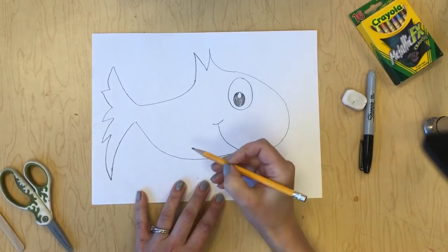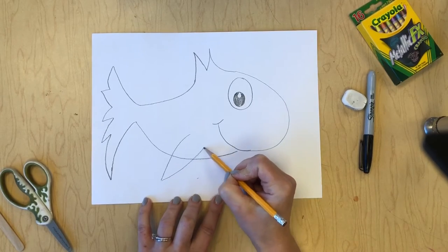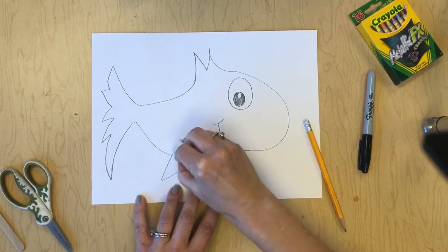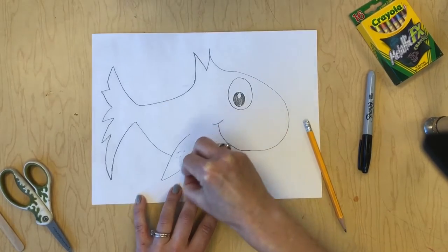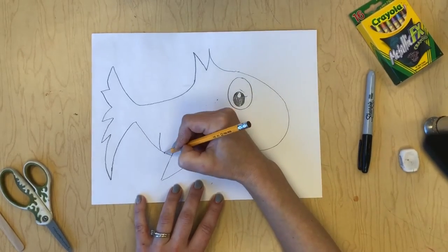Now we're going to add the fin at the bottom by using two curved lines that form a V shape. And I'm going to erase this part of his body to make his fin look like it's connected. Of course we can't forget our fish's gills.